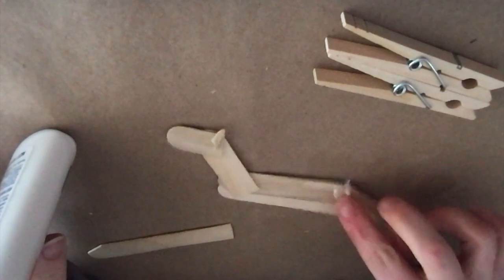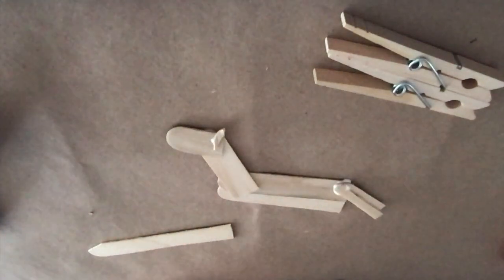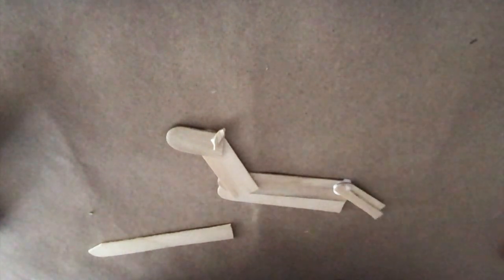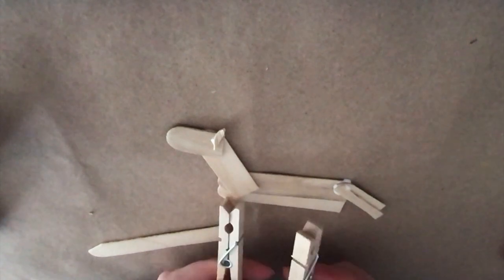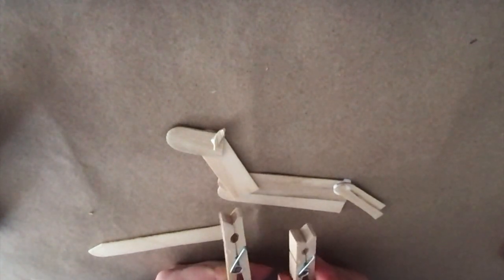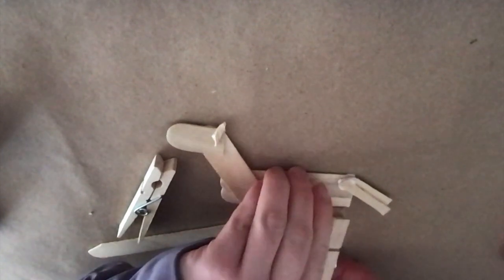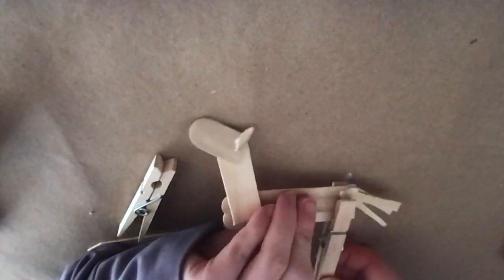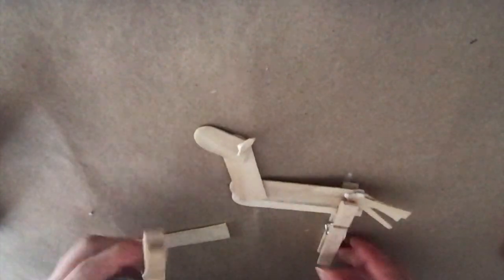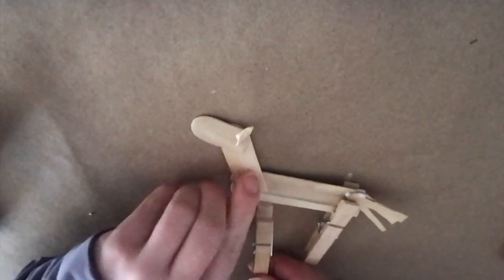So our horse's tail is together, its head, neck, ear, and body is together. Our next step will just be propping our horse up with our clothes pins. So I'm going to take my clothes pins and put the horse together just like this so our horse will be able to stand.